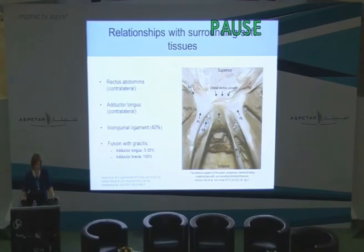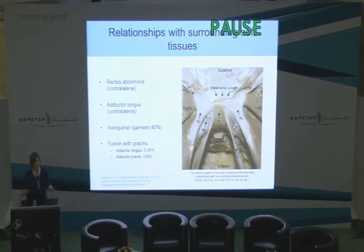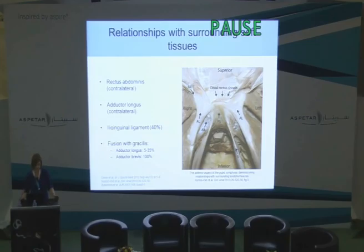Anthony showed this slide yesterday — just as a quick revision. We know that adductor longus also blends with the contralateral distal rectus sheath and the contralateral adductor longus, so almost in the same line or plane as the arcuate ligament. In some cases, the ilioinguinal ligament on the same side. When looking at imaging, you may or may not expect to see fusion with gracilis — not so common for adductor longus, but in most cases adductor brevis and gracilis fuse in the region of the symphysis.